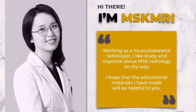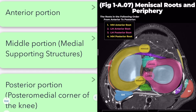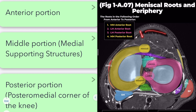Hello, I'm Zhiyunee from MSK MRI. The medial side of the knee can be divided into anterior, middle, and posterior thirds. The anterior third extends from the medial border of the patellar tendon to the anterior border of the longitudinal fibers of the superficial medial collateral ligament.